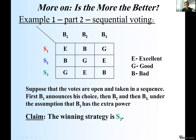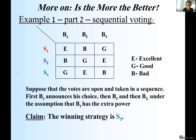We are back to sequential voting with the same table and the same preference order that we had before — nothing changed. S2 is the worst for board member number one, who is the CEO, and S1 is the best for him. Now again, suppose that the votes are open and taken in a sequence.